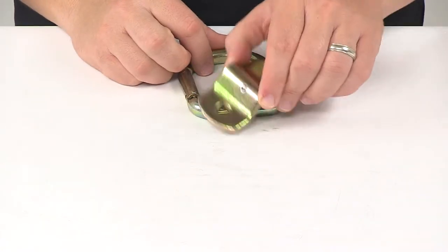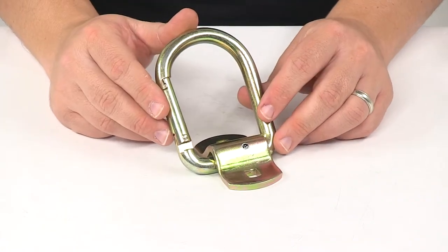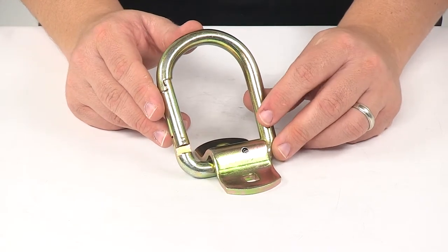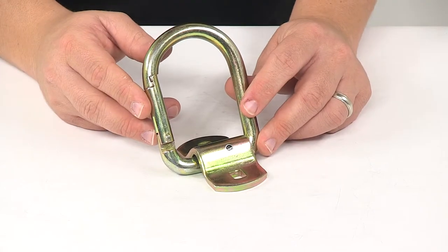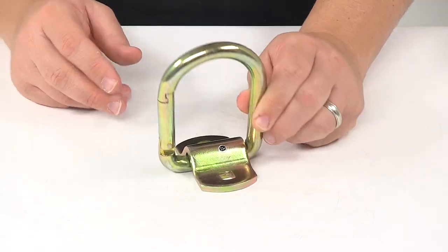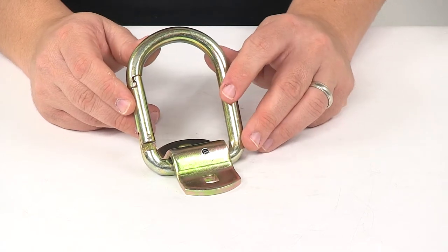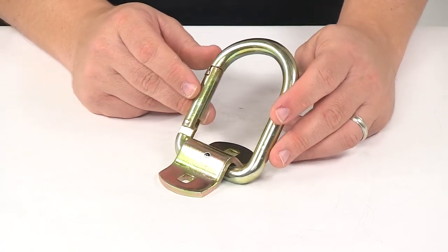The unit features a safe working load limit of four hundred pounds, with a maximum load or break strength of one thousand two hundred pounds. Just keep in mind that tie-down anchors must be chosen according to their safe working load limit. So the weight of the secured cargo must not exceed the combined working load limit of the anchors being used.